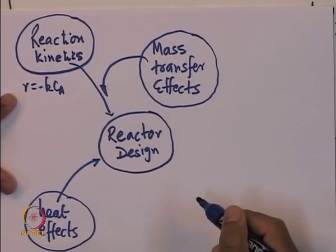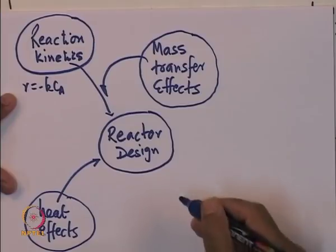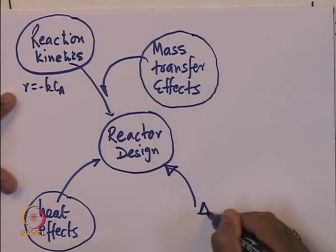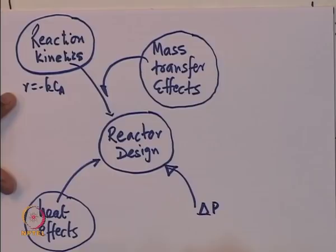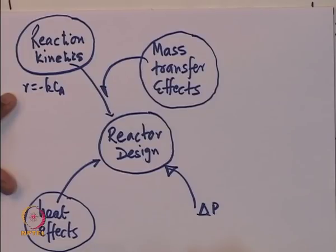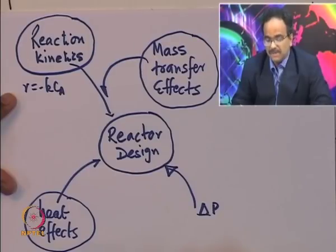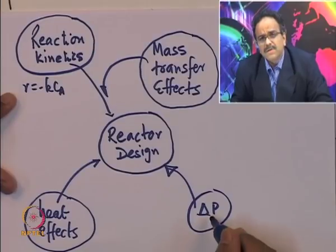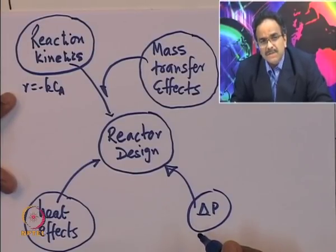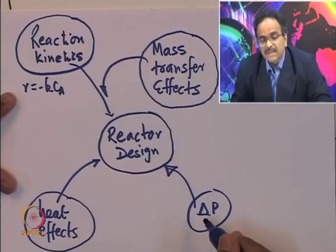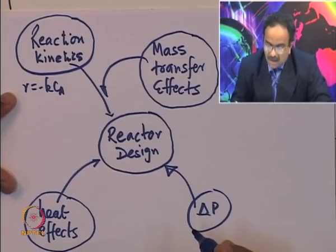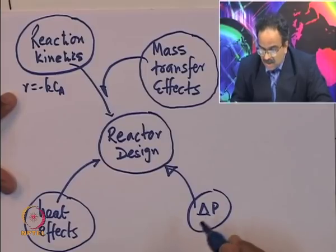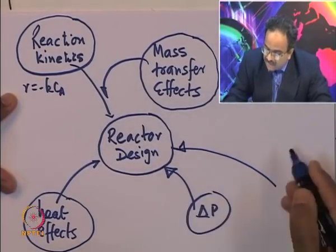What else? Then there can be pressure drop. In the reactor, especially in the case of gas-phase reactions, if there is a change in pressure drop there is a change in concentration, and that will again affect the rate of reaction. Delta P is again very important; what we need to do here is write a momentum balance and take into consideration the frictional pressure drop and so on. In the case of gas-phase reactions this is very important.